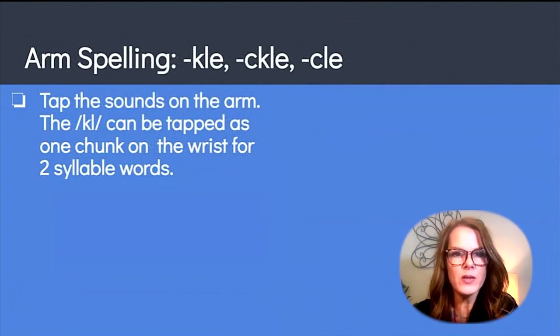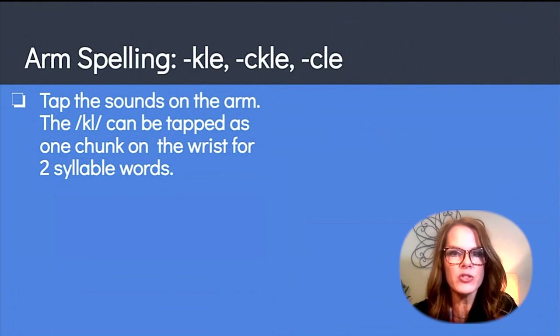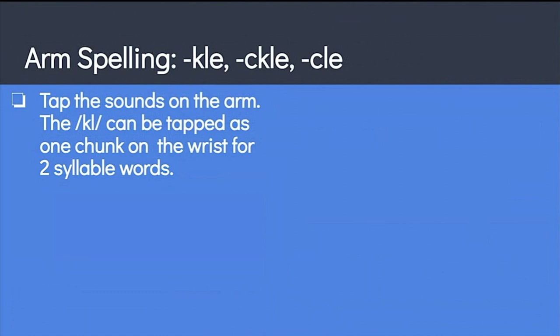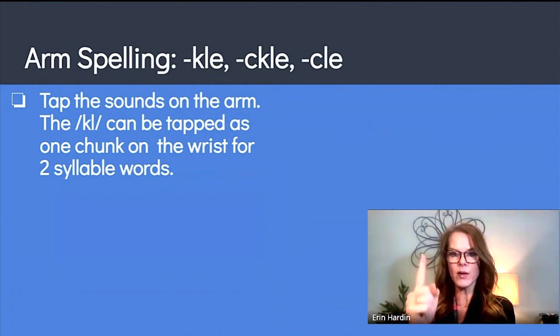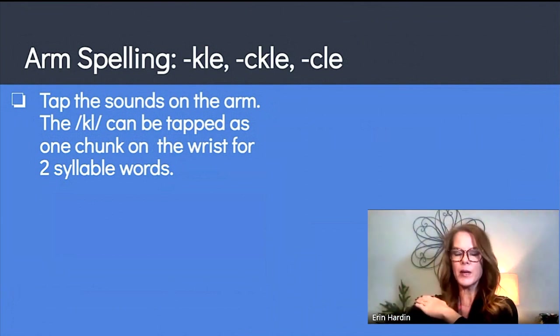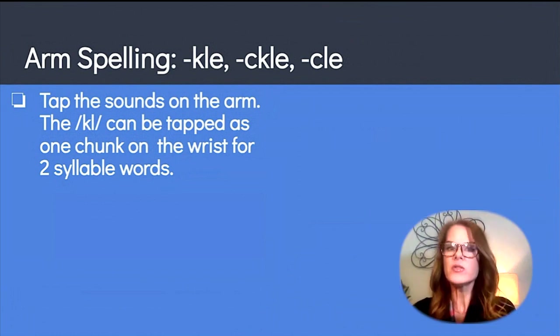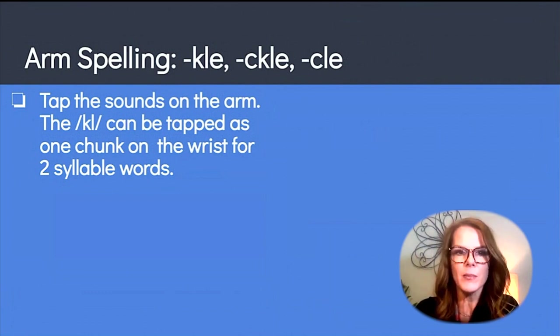When spelling words, a regular strategy we use is segmenting the sounds on our arm, which is called arm spelling or arm tapping. For two-syllable words that end in consonant LE, there are two ways you can arm spell the words. You could tap each of the syllables separately, like you would do for most two-syllable words. For example, backpack. You would take one syllable, back: B, A, C, back, and then the next syllable, pack: P, A, C, K. You could do that for these consonant LE words. Or you could simply add the ending syllable on the wrist. And here are some examples of that.